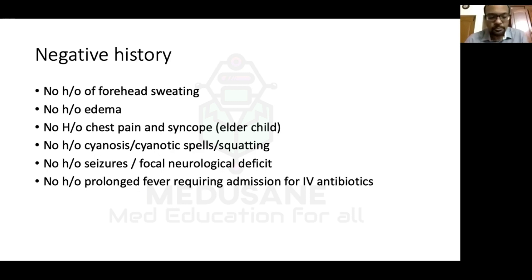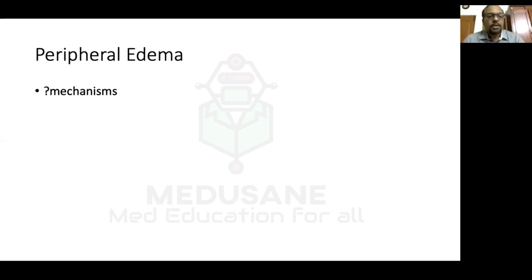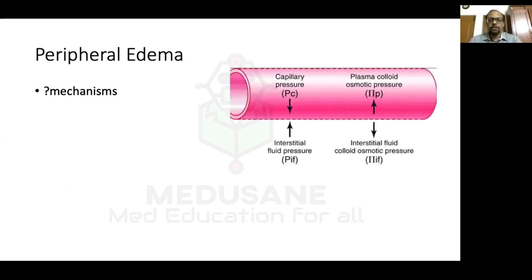No history of prolonged fever requiring admission for IV antibiotics — this is the key history for infective endocarditis. Any patient with an unrepaired congenital heart disease is at risk of infective endocarditis, presenting with prolonged fever not responding to routine antibiotics requiring IV antibiotics for four to six weeks. Other symptoms of infective endocarditis include petechiae, Osler nodes on finger pads, and hematuria.